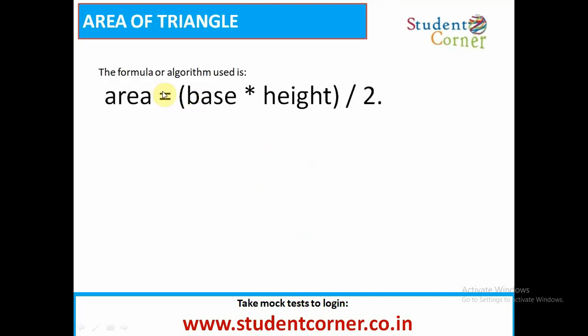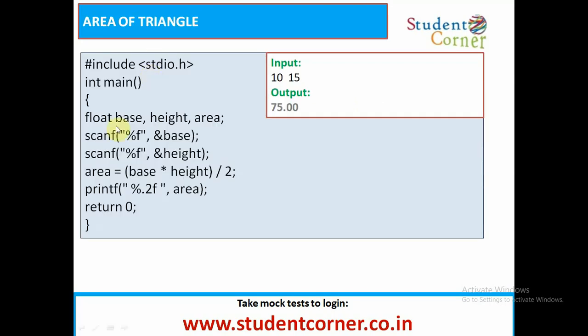Using second formula, the formula or algorithm used is area equals base into height by 2. Here we need to take base and height as the inputs. We need to find the area equals base into height by 2, then we need to print the area. Obviously we will get the output.